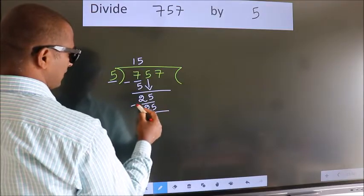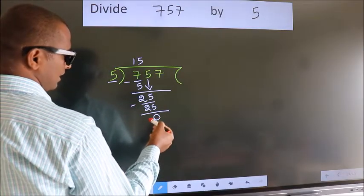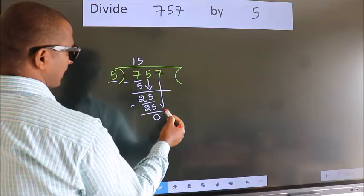Now we subtract. We get 0. After this, bring down the beside number.